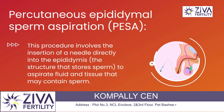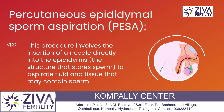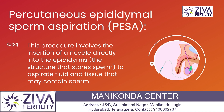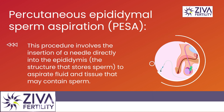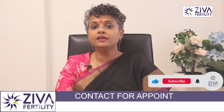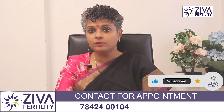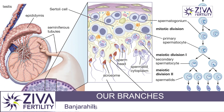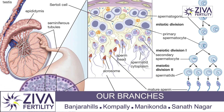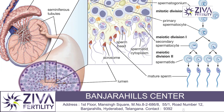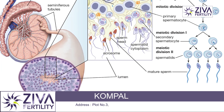We have PESA — Percutaneous Epididymal Sperm Aspiration. This procedure involves the insertion of a needle directly into the epididymis, a structure that stores sperms around the testis, to aspirate fluid and tissue that may contain sperm.